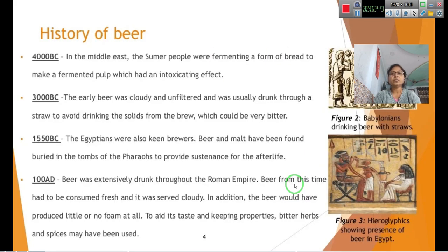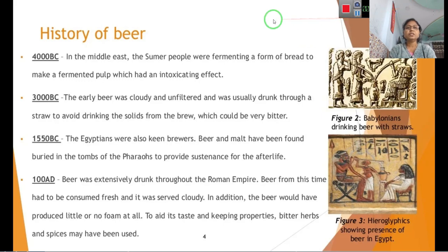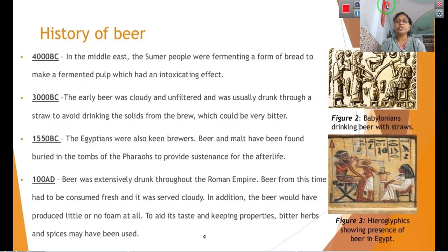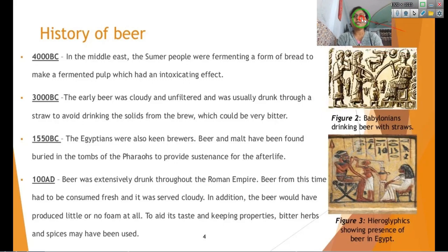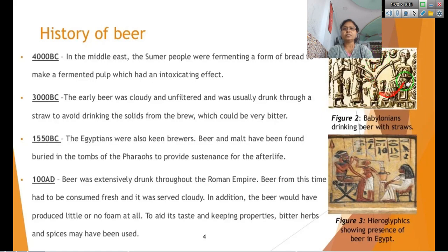Looking at the history: as far back as 4000 BC in the Middle East, the Sumerian people were fermenting a form of bread to make a fermented pulp which had an intoxicating effect. Early beer observed around 3000 BC was very cloudy, unfiltered, and was usually drunk through a straw, as you can see the Babylonians doing here. It was very bitter.